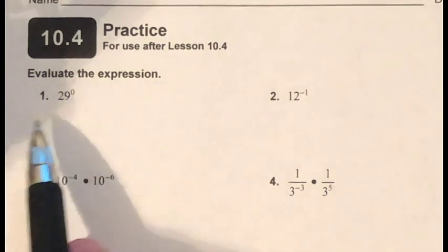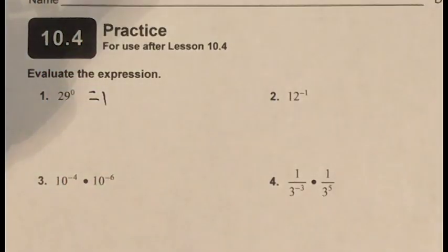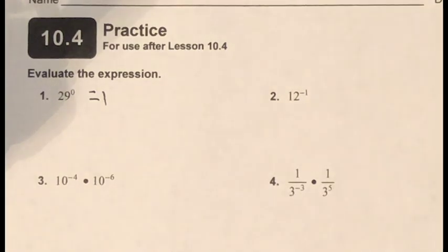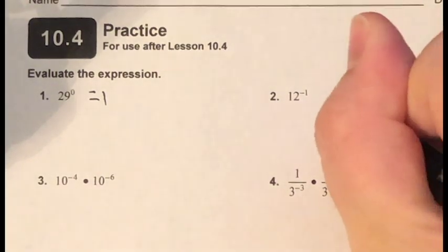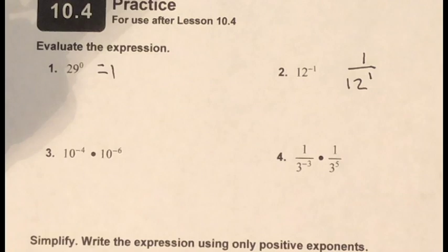Problem one: 29 to the zero power. Anything raised to the zero exponent will always be one. Problem two: 12 to the negative one. I don't like the negative exponent, so I can rewrite this as a fraction — one over 12 to the one power — getting rid of the negative exponent.